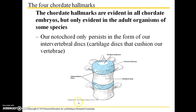An interesting example of this is the fact that our notochord only persists in the form of our intervertebral discs — the cartilage discs that cushion our vertebrae. These blue discs, which are not bone but very firm tissue, are actually a remnant of our notochord.